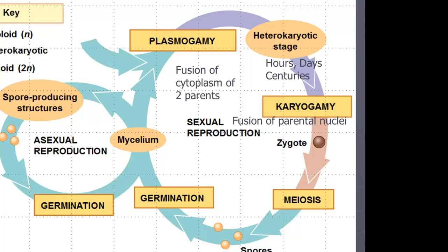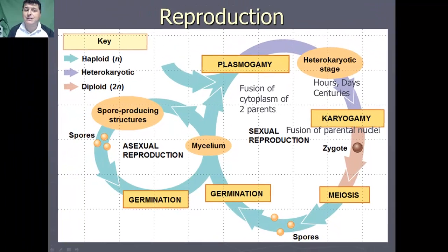At the point that our two nuclei are going to actually fuse together, that's called karyogamy. We're going to create our first diploid cell, which is going to be our zygote. The zygote will then reproduce by meiosis to produce haploid cells, which will develop into spores, which then through germination will become more mycelium. And that will be our sexual reproduction.